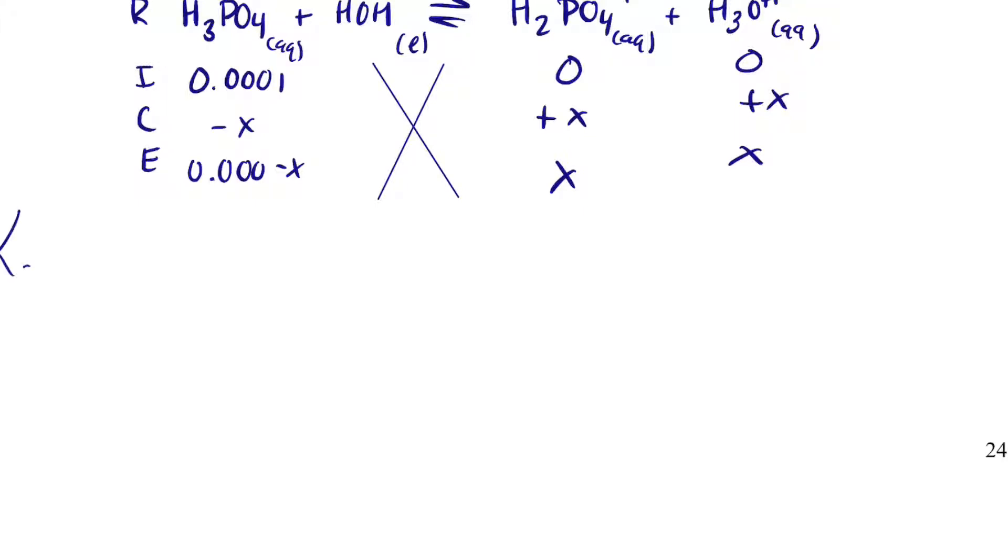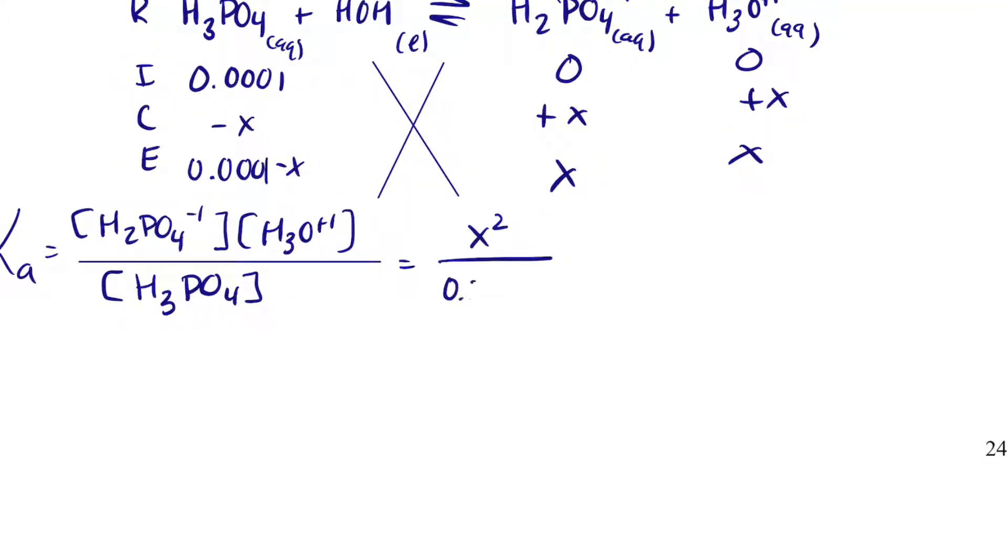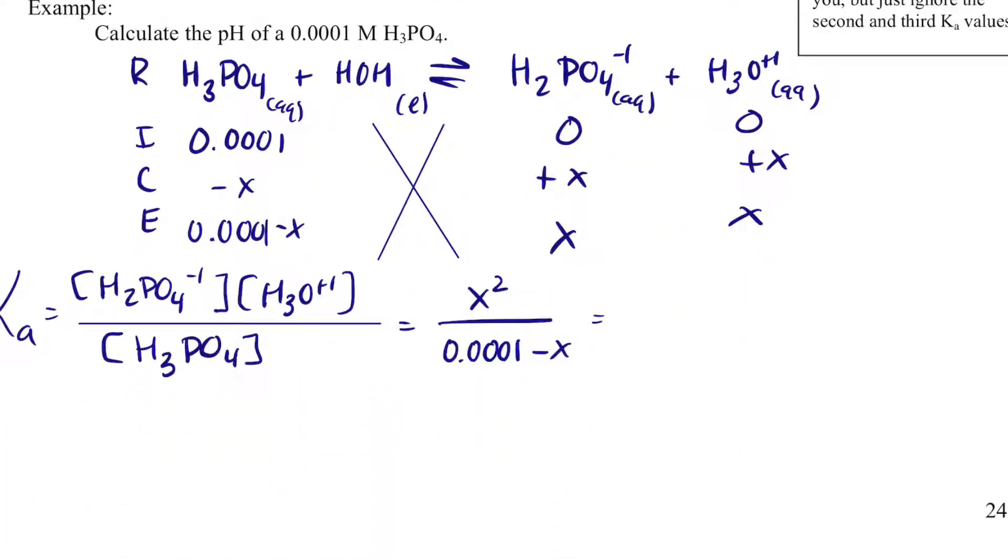And so I can set up a Ka expression. I can use Ka here because I did produce H3O plus 1. And it's always a good idea to write your Ka expression because on the AP test, you will get a point for just doing that. And we get x squared divided by, oops, I forgot a 1 there, 0.0001 minus x. And that equals, for this reaction, that'll be this first Ka. That'll be 7.5 times 10 to the minus 3.